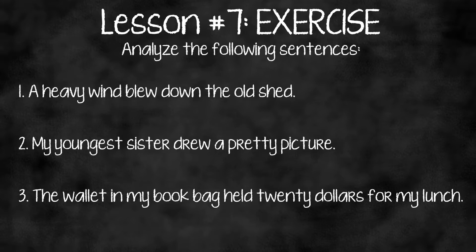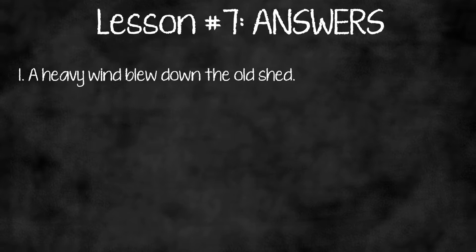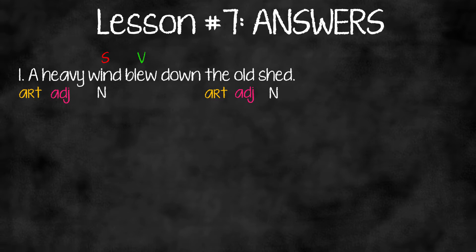'A heavy wind blew down the old shed.' 'Blew' is the action. 'Wind' is the subject which does the action. We have two nouns here. Note that 'shed' did not blow at all — it is not the subject; 'wind' is. 'Wind' is a noun and it is the subject. The modifier of the subject 'wind': 'heavy' gives us information and it is an adjective; 'a' is an article — it modifies 'wind' as well. 'Shed' is a noun and it is 'old' — therefore 'old' is an adjective, and it has the article 'the' modifying it.